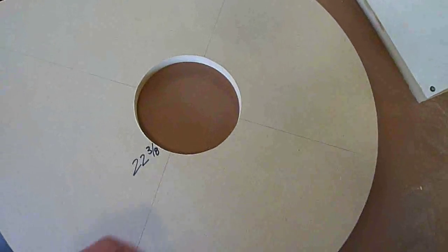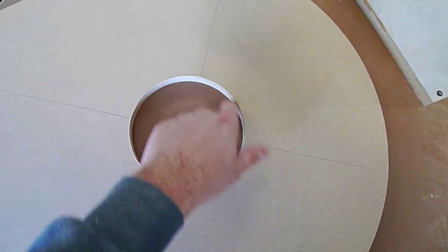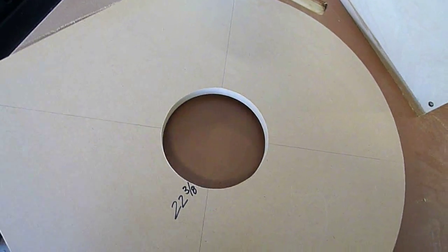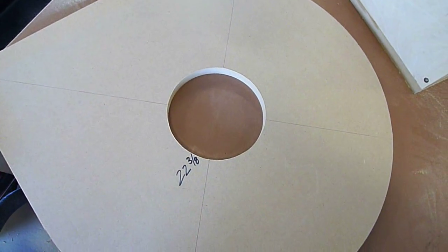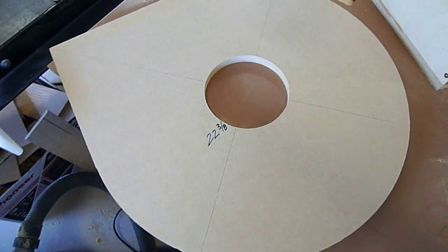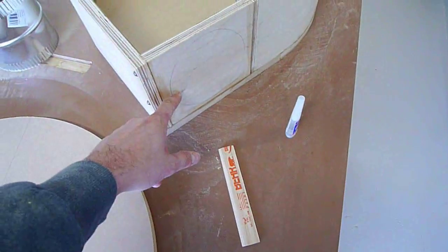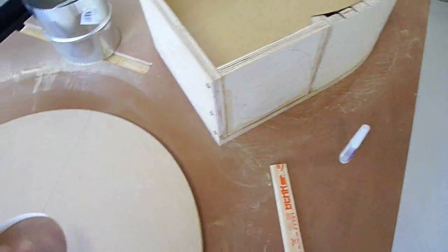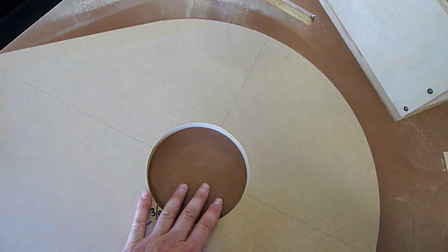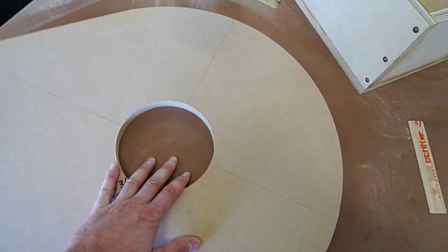We used the trammel, as you'll see in the detailed write-up, to cut this circle. And this is actually the top. I figured instead of making an entire separate template piece, I'll just do it right on the top, and then I'll use this as a template and set it onto this and route this circle out too. So I only need to make one circle that works perfectly, and it'll work just fine.